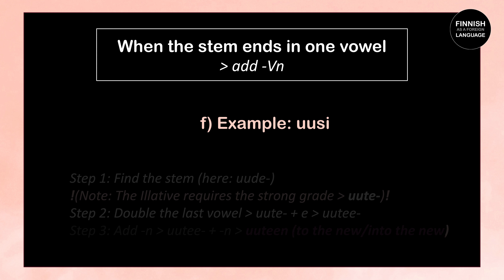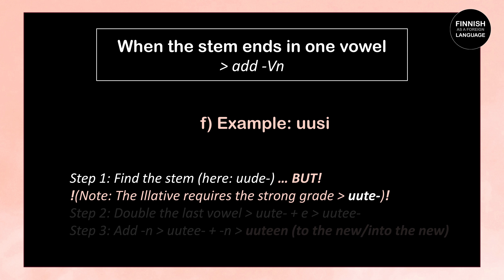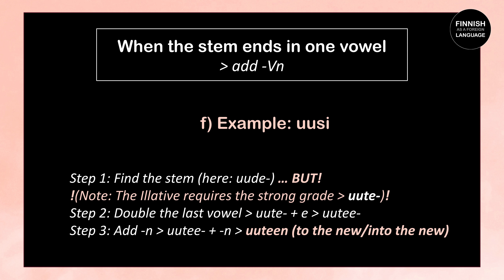The next example is a bit more challenging: uusi, which means new. We find the stem, which is uude. But since the illative requires the strong grade, we take the stem with the letter T instead of D. Then in the second step we double the last vowel: uute + e = uutee. Then we add N: uutee + N = uuteen, which means to the new or into the new.